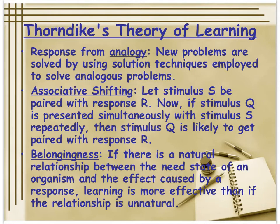Associative shifting: if stimulus S is paired with response R, and stimulus Q is presented simultaneously with stimulus S repeatedly over time, stimulus Q is likely to get paired with response R — that's classical conditioning. Belongingness: if there is a natural relationship between the need state of an organism and the effect caused by a response, learning is more effective. Things that belong together, that you can group together, are more easily remembered together.